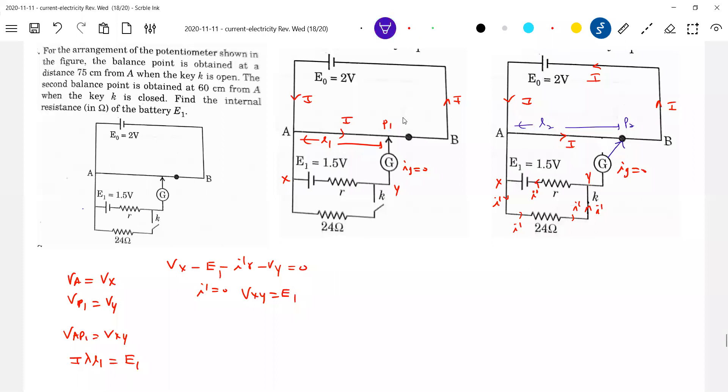Now, again, VAP2, no current through galvanometer. So VA equal to VX, VP2 equal to VY. This X dash, that one, again, I'll give some other symbol. X dash, Y dash. VAP2 should be equal to VX dash Y dash.